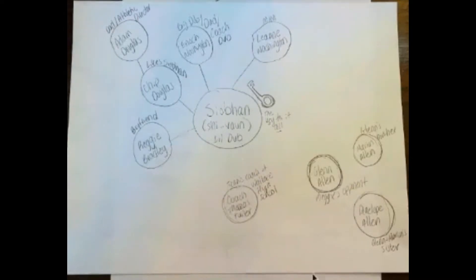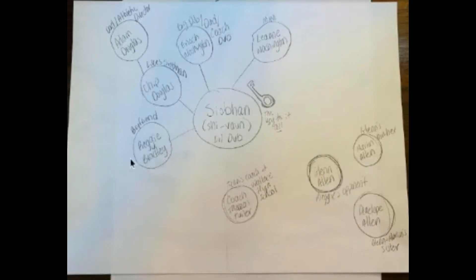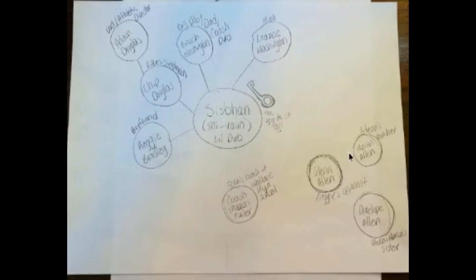We have some antagonists — people who cause problems. We have Coach Thomas Turner, the tennis coach at Wallace High School. We have Glenn Allen, who is Reggie's opponent in the tennis match. Glenn's brother is Marion, also key to this section. And their sister is Penelope. This is the Allen family, which will become even more important as we go along.